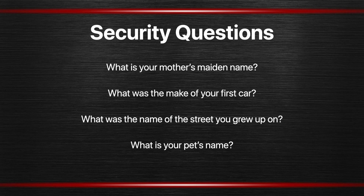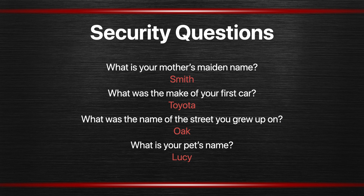Here are some of the security questions you may see — there are probably a dozen commonly asked ones, and it doesn't matter how unusual they seem, they're just not very secure. Typical answers are last names, and with just a few hundred last names you've covered most people's answers. Makes of cars are even fewer. Streets people grew up on are often within a list of several hundred names. Pet names are even weaker. And if you've ever posted anything to social media, your pet's name and a lot of this other information is probably already out there.